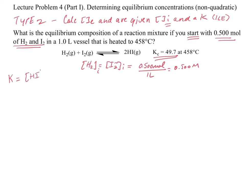That's another good thing to have on your paper as you get started. If we have initial conditions, this equilibrium expression only accepts equilibrium values. We've identified these as initial values based on the word 'start' — that's what we're starting the reaction with. So we cannot plug these values in. We have to set up an ICE table to work through the stoichiometry and figure out what things will be at equilibrium.